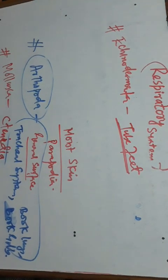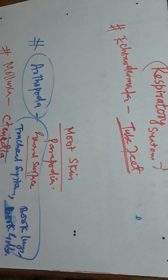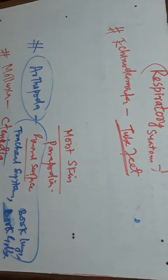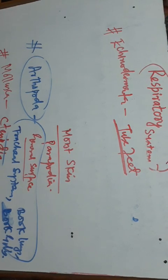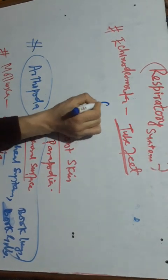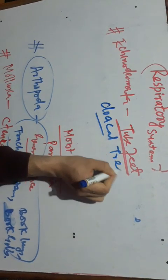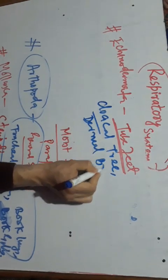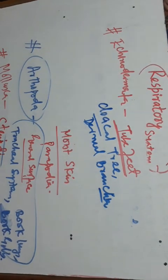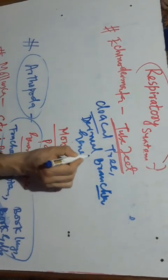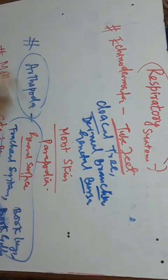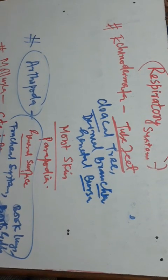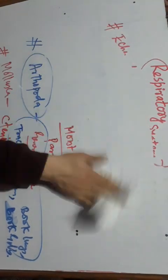In addition to tube feet, respiration in Echinodermata also occurs by the help of collocal tree, dermal branchia, and genital bursa. So in Echinodermata, respiration takes place through tube feet, collocal tree, and dermal branchia.